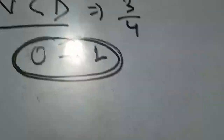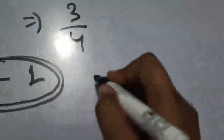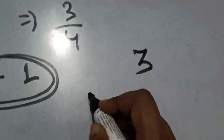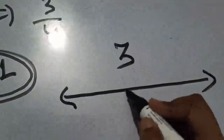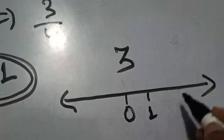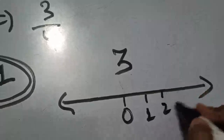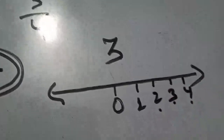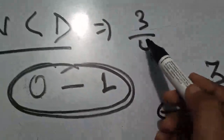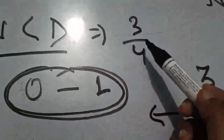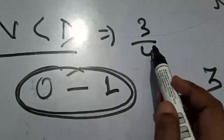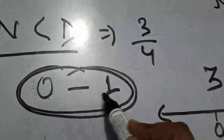Why are we doing this? If I tell you to find 3 on the number line, you can easily find it — 1, 2, 3. But in rational numbers we need to find where the number lies more precisely. So this is clear: if the numerator is smaller than the denominator, the value will be between 0 and 1.